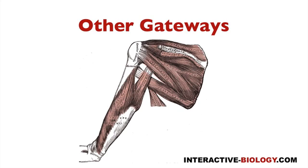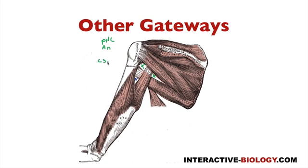Only one structure passes through the triangular space: the circumflex scapular artery. Through the triangular interval, we have two things: the radial nerve and the deep brachial artery.